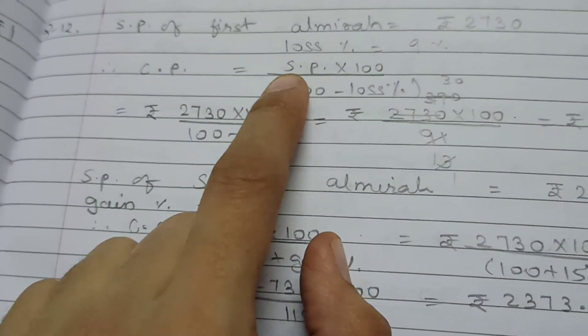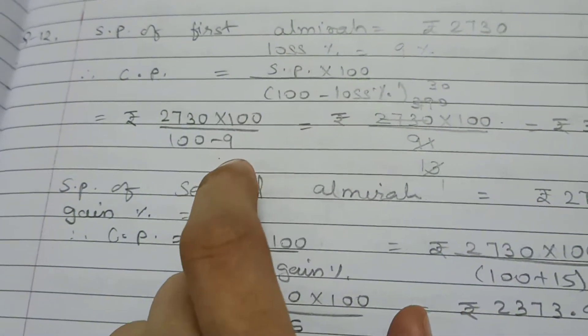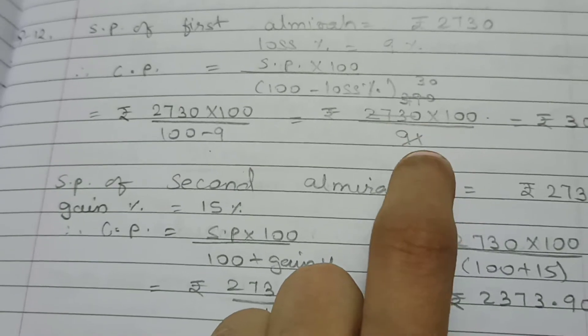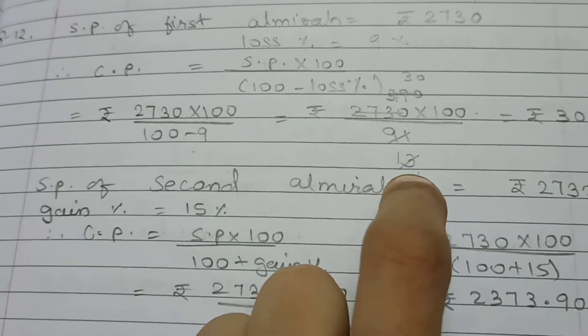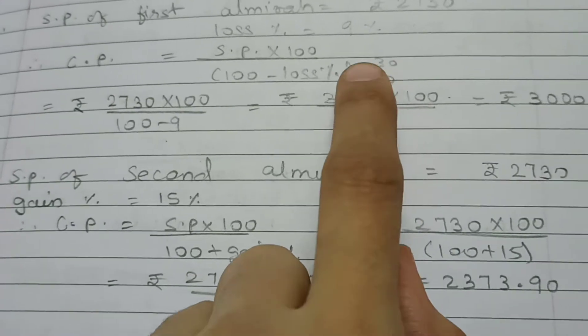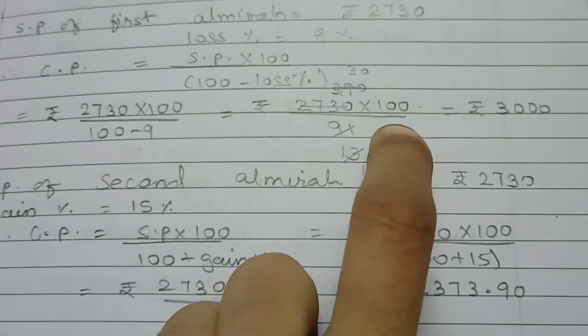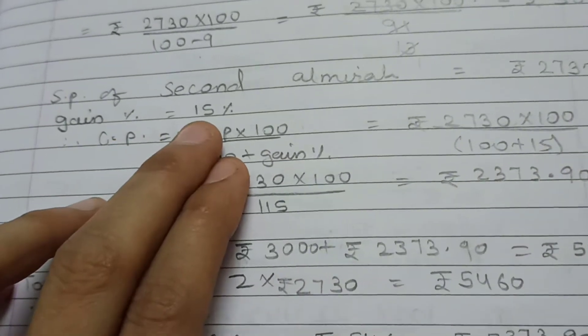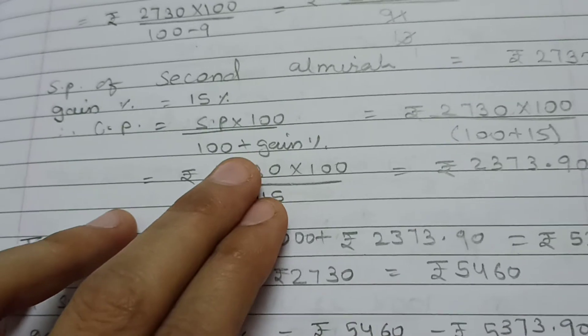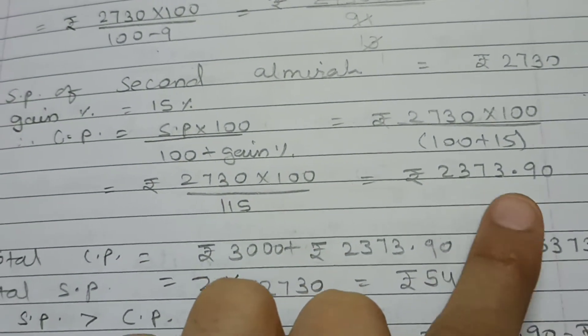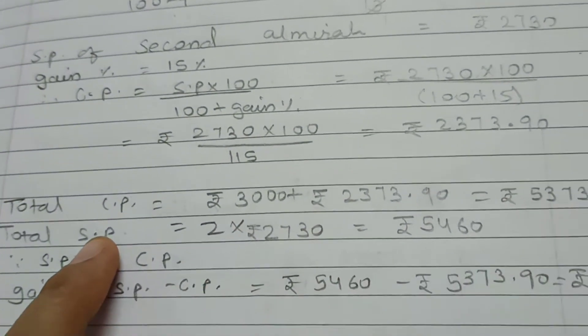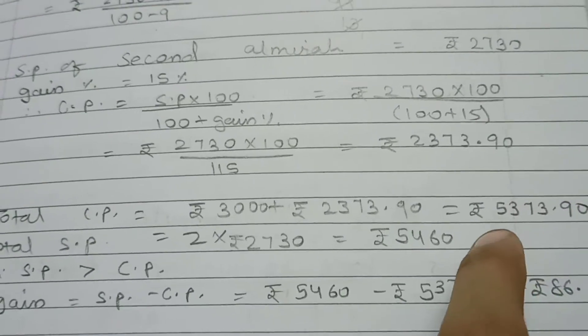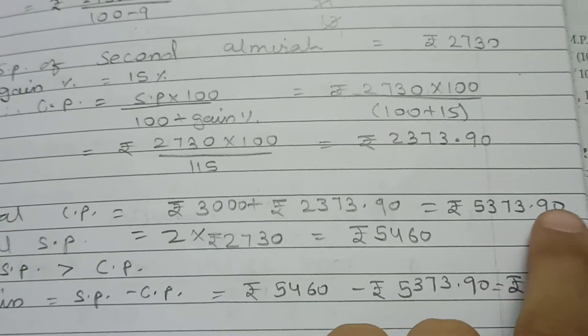Now, SP is 2730 multiplied by 100 divided by 100 minus 9, that is 91. So, dividing this with the help of 7, we get 3000. Second, when Almira was sold, gain was 15 percentage. Again, applying the formula, we get rupees 2373.90. Total CP, total cost price is 3000 plus 2373.90, which equals 5373.90.